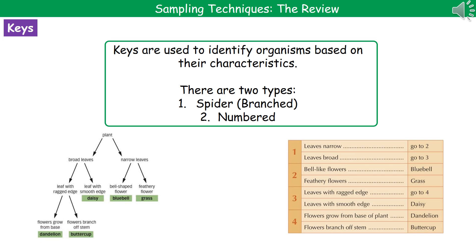The numbered key has a slightly different layout, but the same principle — it's kind of like one of those choose-your-own-adventure books. Number one gives you your first question: if the leaves are narrow, you go to question two; if the leaves are broad, you go to question three. You just keep going through, following the instructions based on what you see, until you end up with the final organism name.